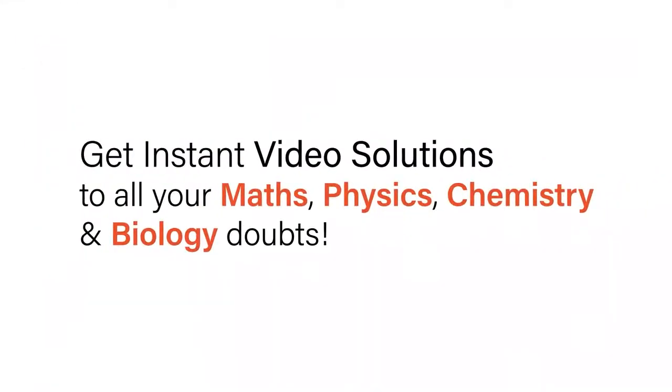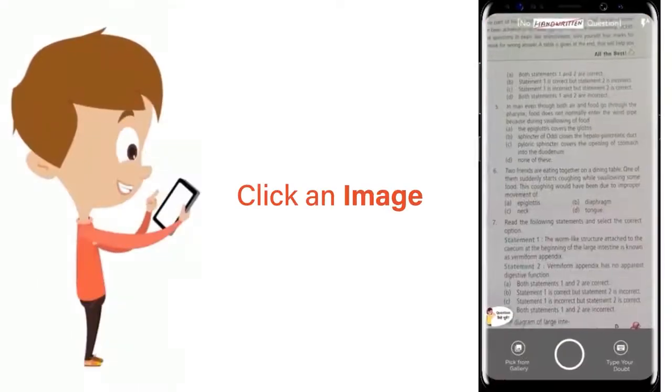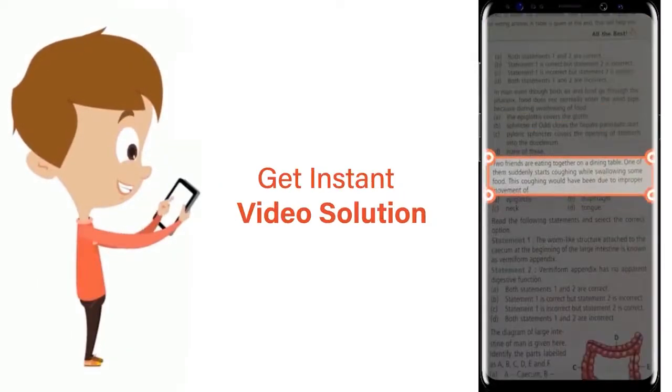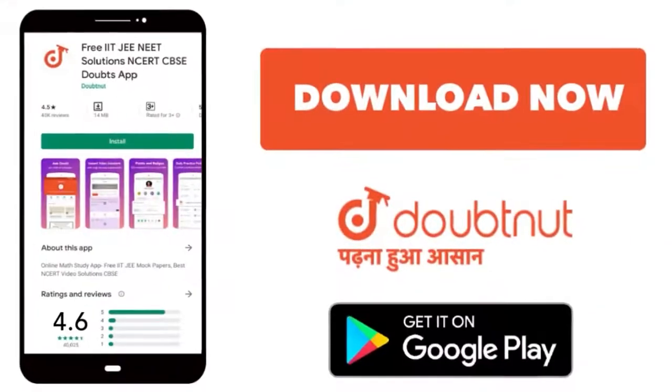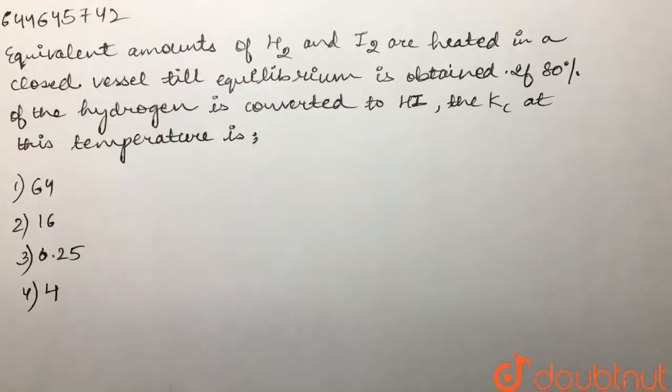With Doubtnut, get instant video solutions to all your maths, physics, chemistry, and biology doubts. Just click the image of the question, crop it, and get instant video solution. Download Doubtnut app today. Our question is: equivalent amounts of hydrogen and iodine are heated in a closed vessel till equilibrium is obtained.